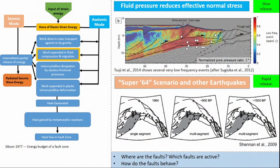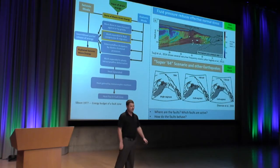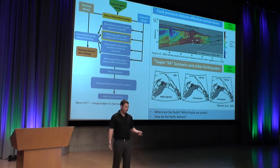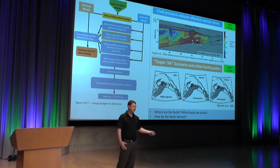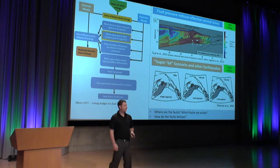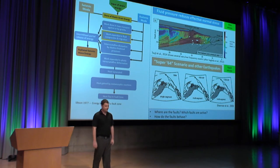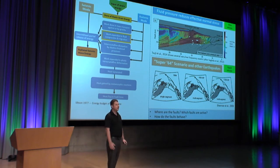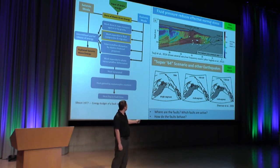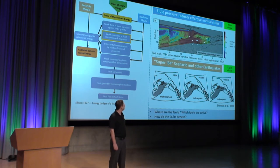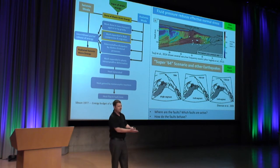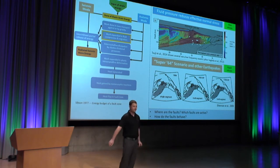So what do faults do? They store strain energy, and we can release that strain energy seismically or aseismically. A seismic release of energy would be slow — you would barely detect it. On this diagram, the white dots are low frequency events associated with almost no seismicity, sliding smoothly along these faults.